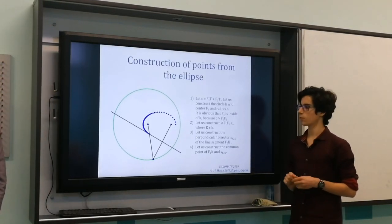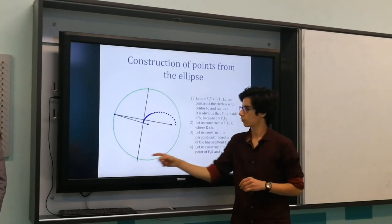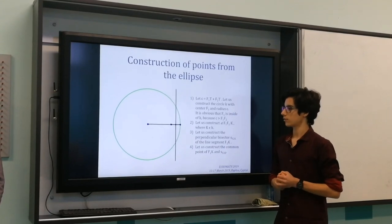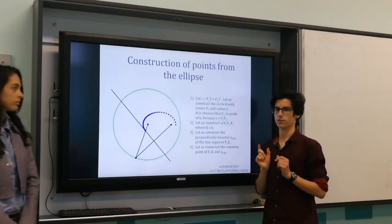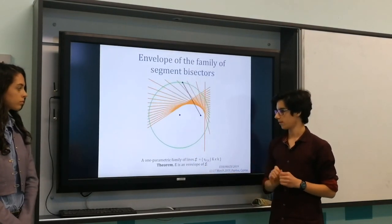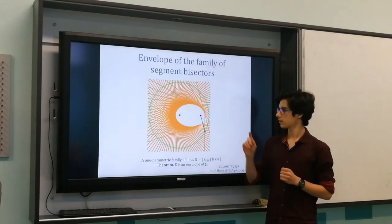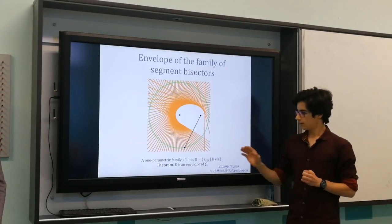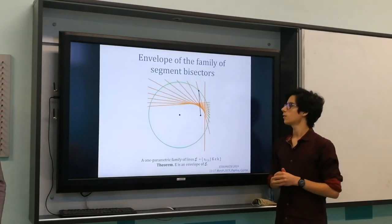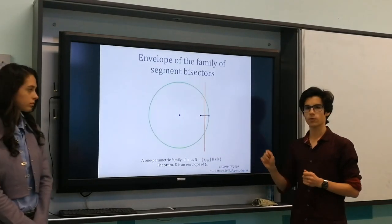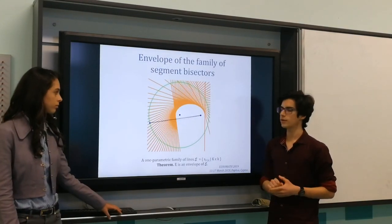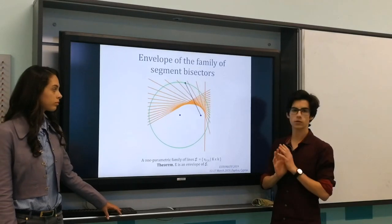Using the algorithm on the right, we can construct points from the ellipse. We use point K, which runs through a circle, as a parameter. In the movie, you can see how the construction is done. Keep in mind that even though we can construct as many points as we want, we cannot construct even small arcs of the ellipse. Then, again using point K as a parameter, we define a one-parametric family of lines E, where those lines are the perpendicular bisectors of the segment F2K. The theorem states that our ellipse E is an envelope of this family of lines. If you take a look at the movie, you can see the ellipse appearing as something like a shadow, even though no points from it are drawn directly.